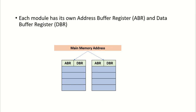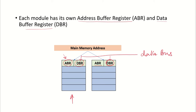Each module has its own address buffer register (ABR) and data buffer register (DBR). Module 0 will have an ABR and a DBR, and similarly the other modules will also have these buffer registers. The ABR stores the address to be accessed and the DBR deals with the data at that address, connected to the data bus. For a memory read, the address is accessed, data goes into the DBR and then onto the data bus. For a memory write, the data comes from the data bus into the DBR and then into that particular address.